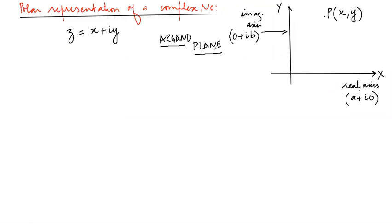Whereas in Argand plane our y axis is imaginary axis and our x axis is real axis. This solves the problem of a complex number having both real part as well as complex part.